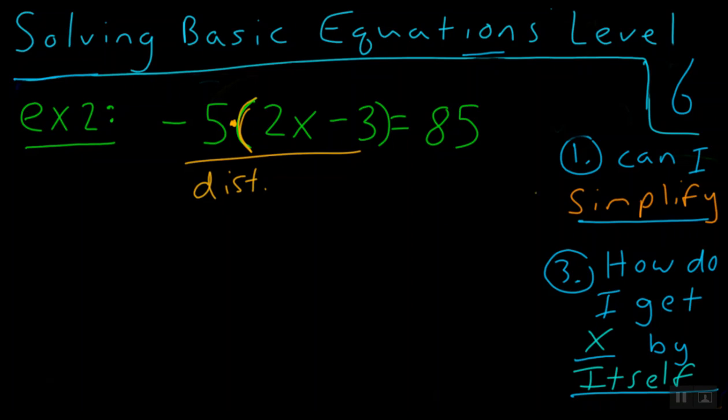Now remember, this is coming from our question 1, can I simplify the left or the right? So here we're going to simplify the left side by using distribution. And we say, well negative 5 times 2x, a negative times a positive is a negative, and 5 times 2 is negative 10x, and negative 5 times negative 3, a negative times negative is a positive, and 5 times 3 is 15, is equal to 85.